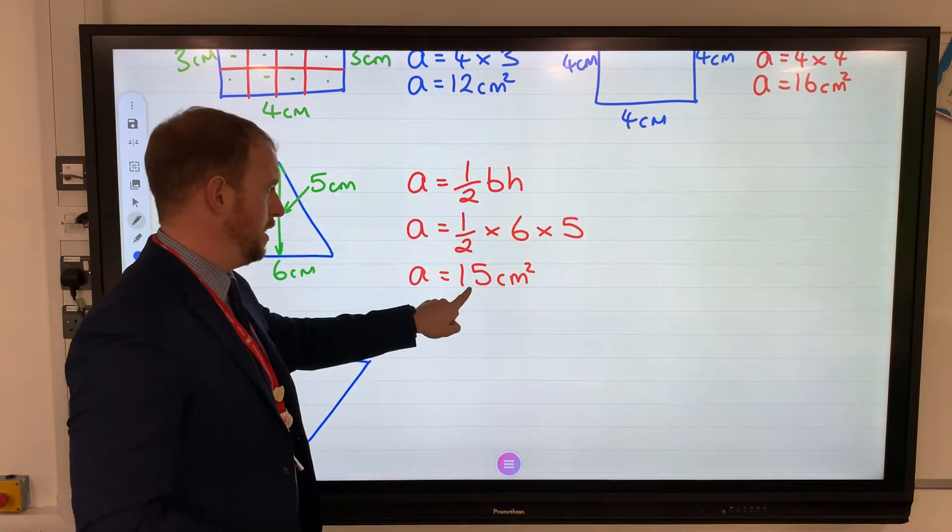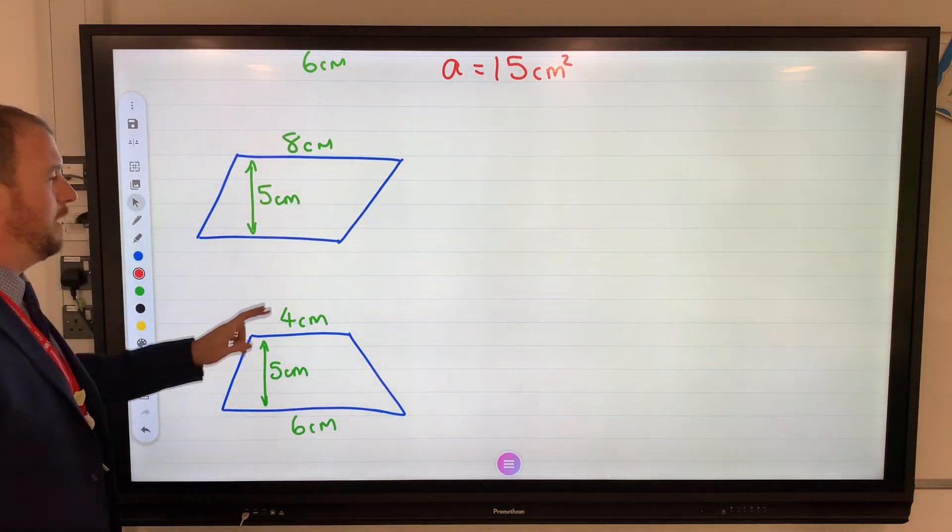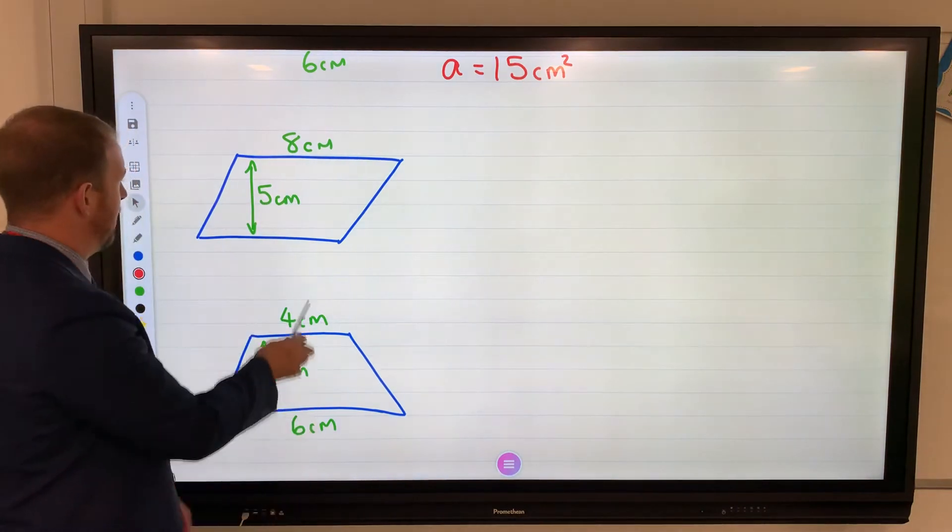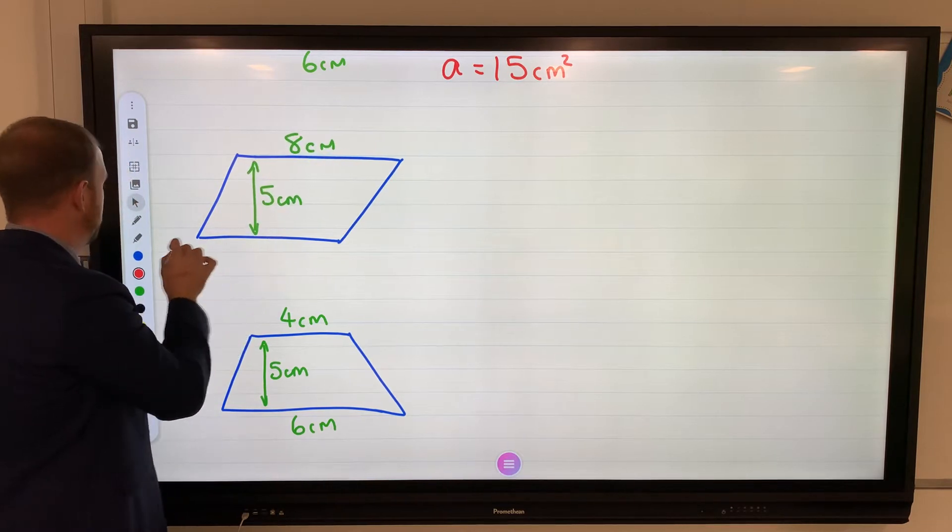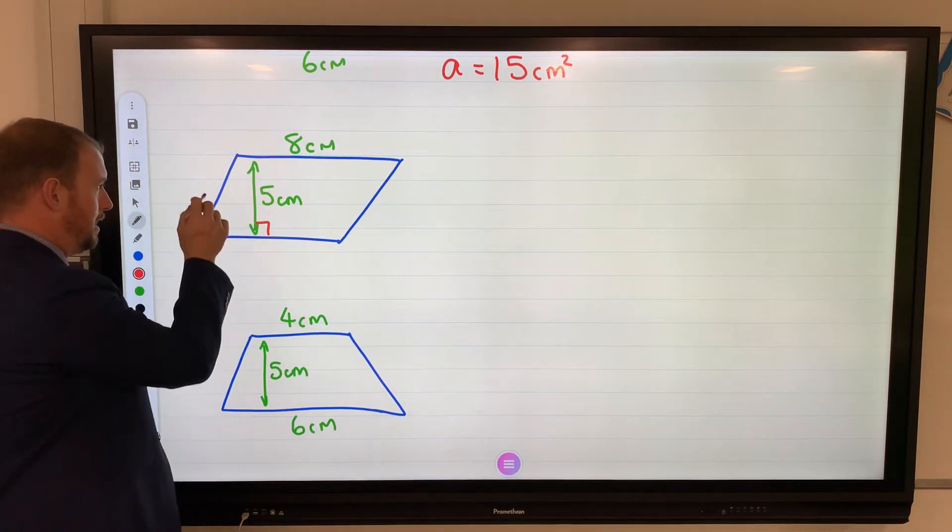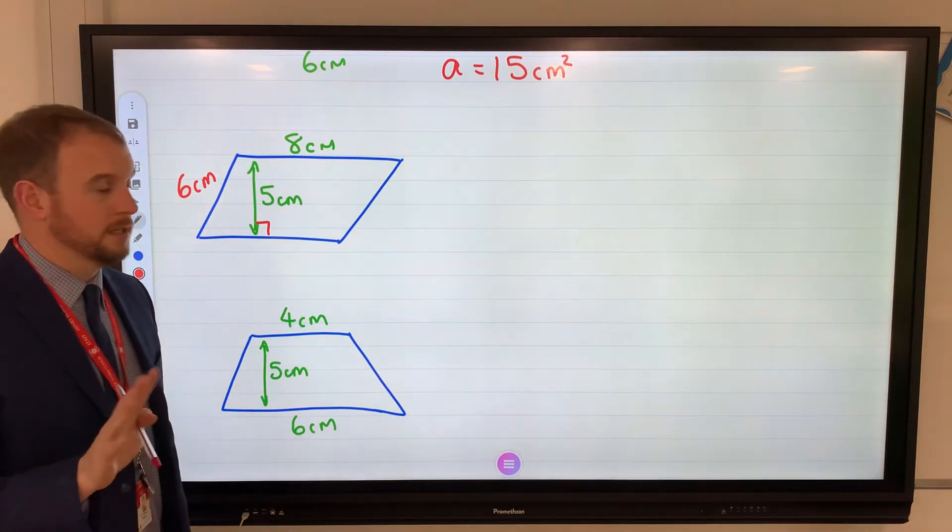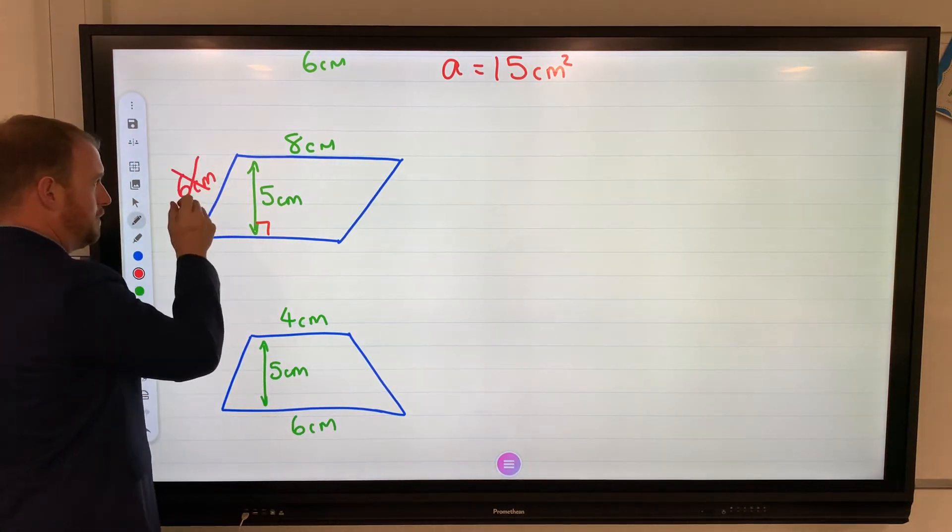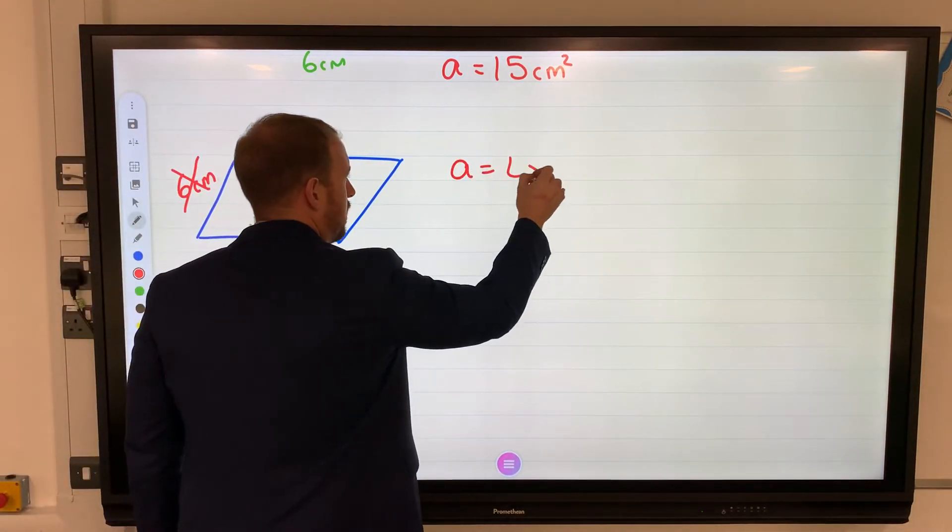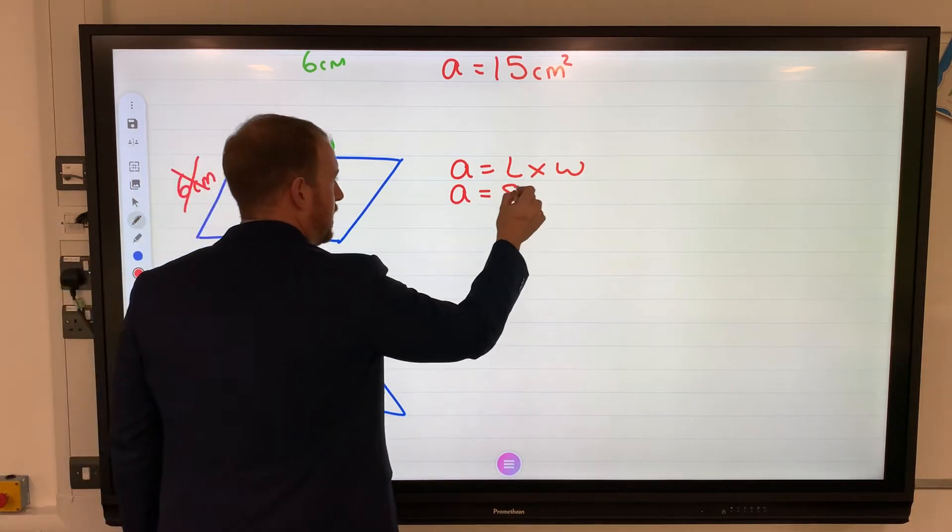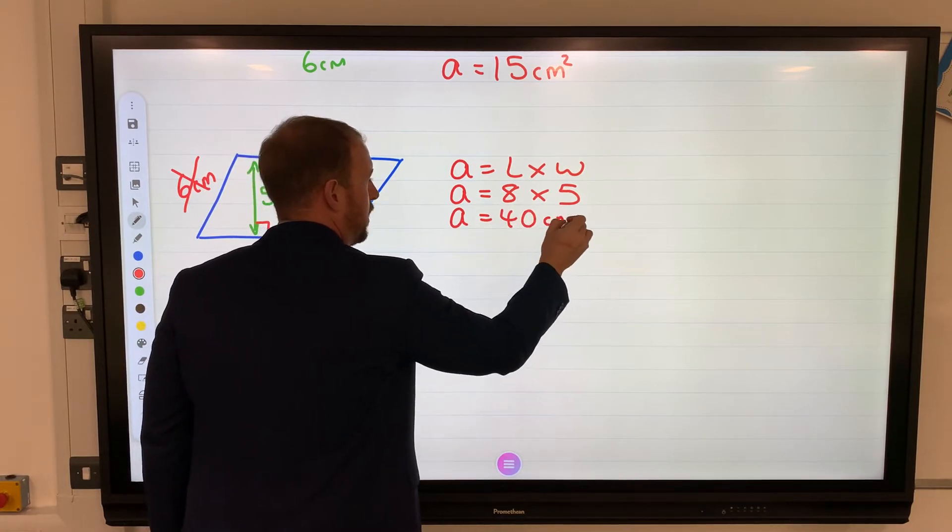Parallelogram - very similar to a rectangle. You'll notice I have given you this part here, which is perpendicular to the length there. I don't want this side here - if they give this length to you, we don't need that. Ignore that bit. It's very similar to a rectangle and it's exactly the same formula: length times width. Length is eight, width is five, eight times five is forty. Don't forget your units: centimeters squared.